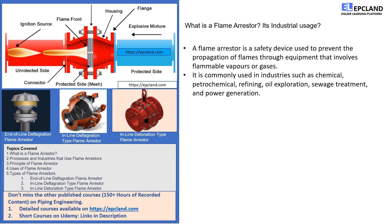This device is commonly used in industries such as chemical, petrochemical, refining, oil exploration, sewage treatment, and power generation. Equipment that involves flammable vapors or gases are potentially dangerous because if the vapors catch fire, the equipment can get burnt or explode. However, with the use of a flame arrester, this situation can be prevented. The flame arrester inhibits the flame from propagating through the equipment, thereby ensuring safety.